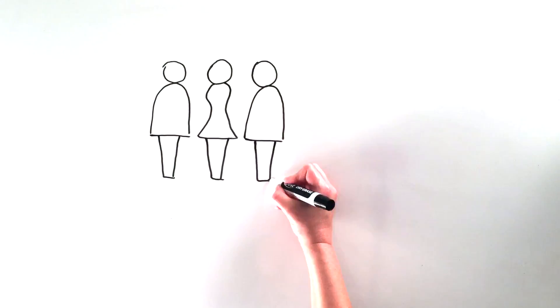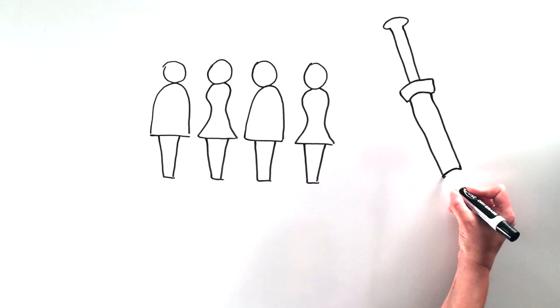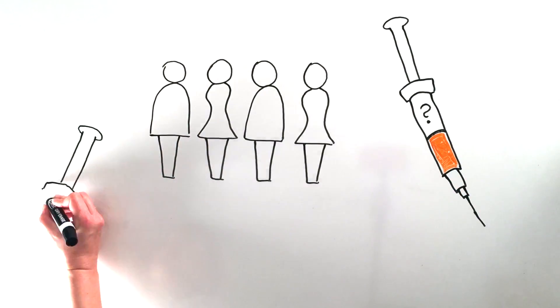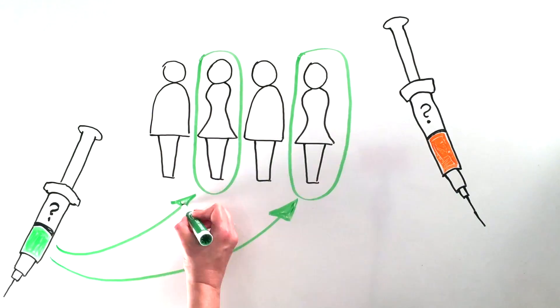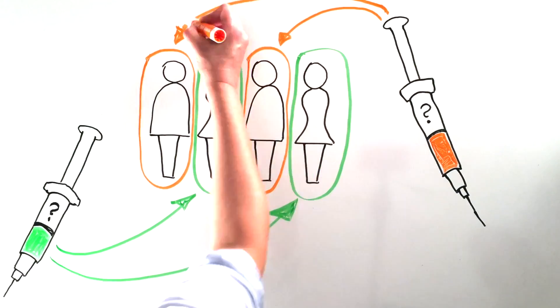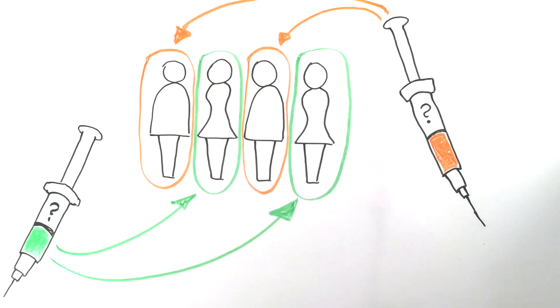Approximately 5,400 healthy volunteers will be randomly assigned to receive either the investigational vaccine or a placebo. Neither they nor the study team will know which until the end of the trial.